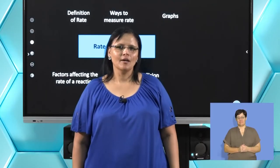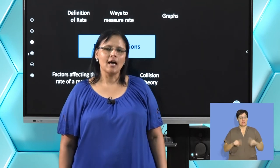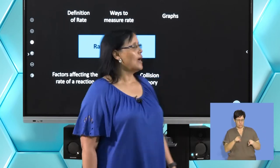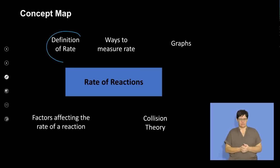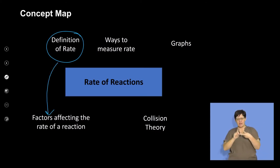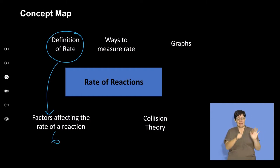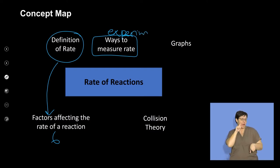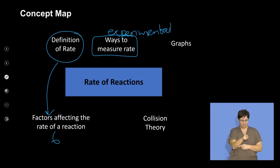Welcome back from the break. We will continue with rates of reactions. Going back to our concept map: we first covered the definition of rates of reaction, then the factors affecting the rate of reaction — the six factors. Now I'd like us to look at the ways to measure rate and how to measure it experimentally, and I will also show some graphs.